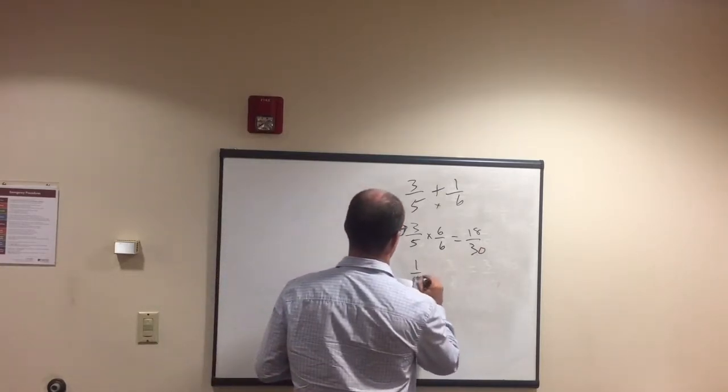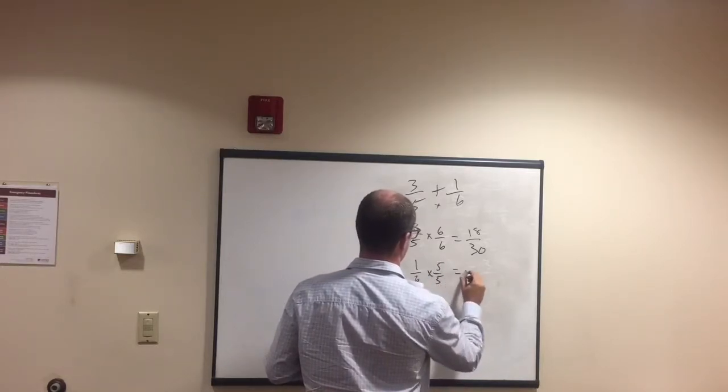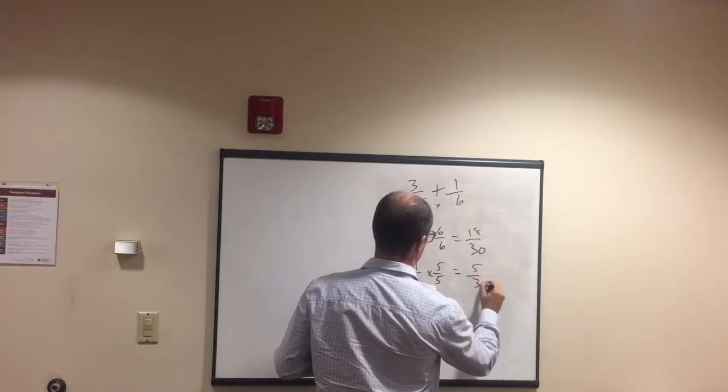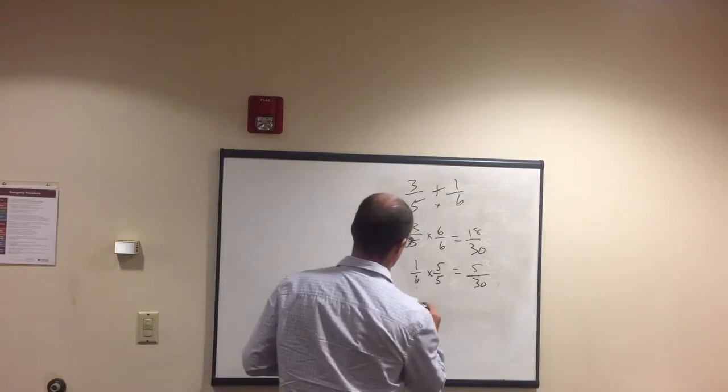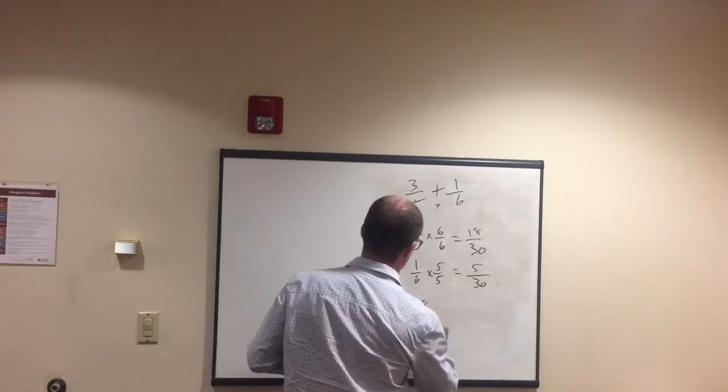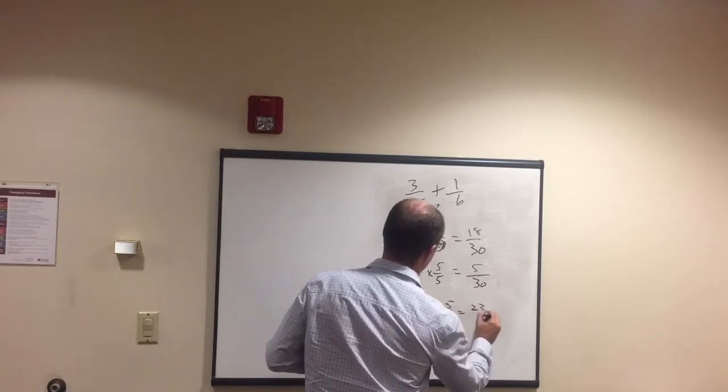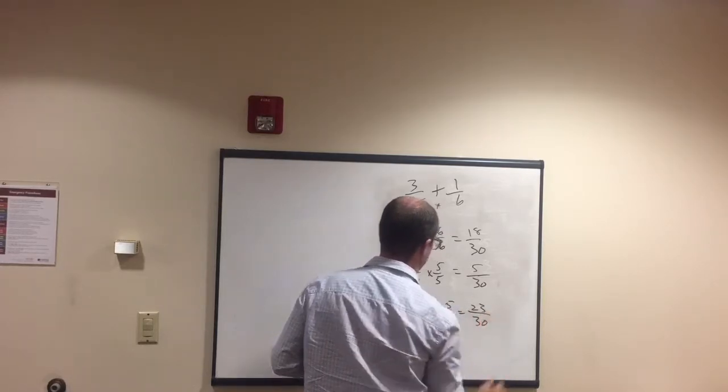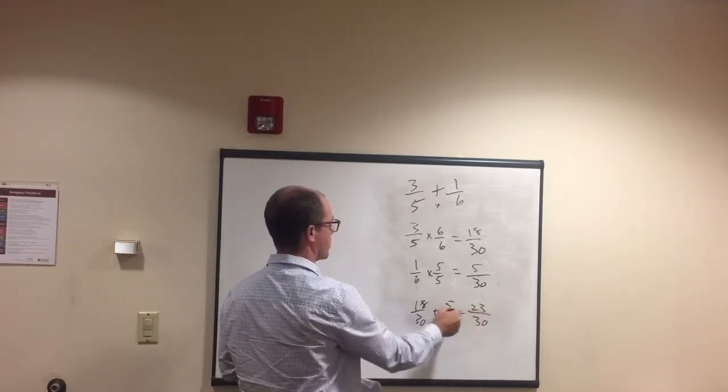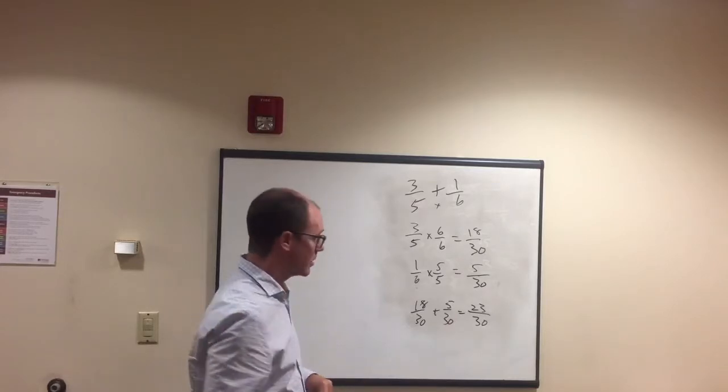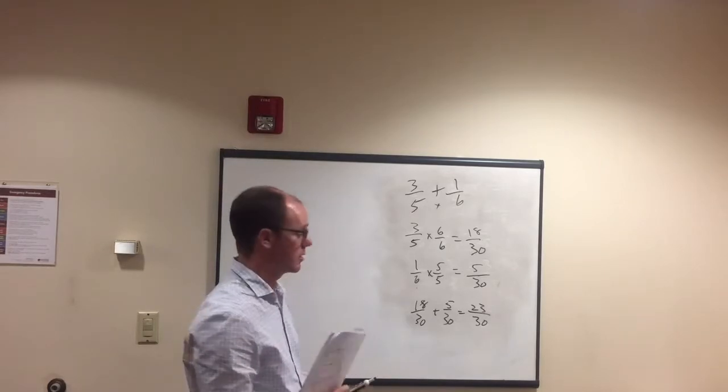3 fifths times 6 over 6 equals 18 over 30. And 1 sixth times 5 over 5 is 5 over 30. And then, putting it together, 18 over 30 plus 5 over 30 equals 23 over 30. Remember, when that denominator is the same, it's going to stay the same here. We don't add 30 and 30 together to get 60. That stays the same. But we do add these two numbers on the top. And that's how we do that.